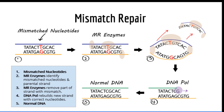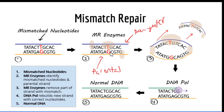Here we can see the steps involved in the mismatch repair system. First, specialized enzymes scan DNA for mismatched nucleotides. Once they find a mismatch, they recruit other enzymes which identify the parent strand. In our illustration, T is incorrectly paired with G — thymine only binds with adenosine, and guanine only binds with cytosine, so this is an error.